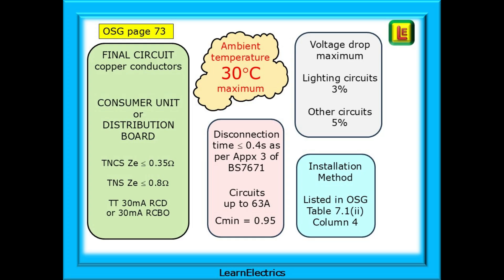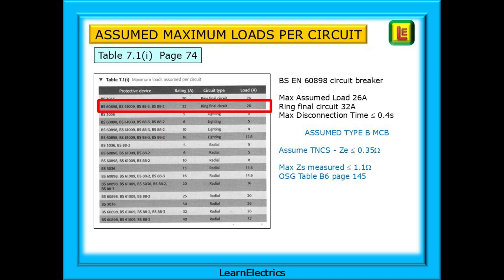At the end of the video I have included some useful visual memory joggers for the many different installation methods. Begin with Table 7.1.1 on page 74, finding the assumed maximum load for the circuit. What is the protective device and what amp rating is it? What type of circuit is it? For our example, we've chosen a 32-amp BSEN60898 circuit breaker to protect a ring final circuit. The table tells us that the assumed maximum load should be taken at 26 amps.